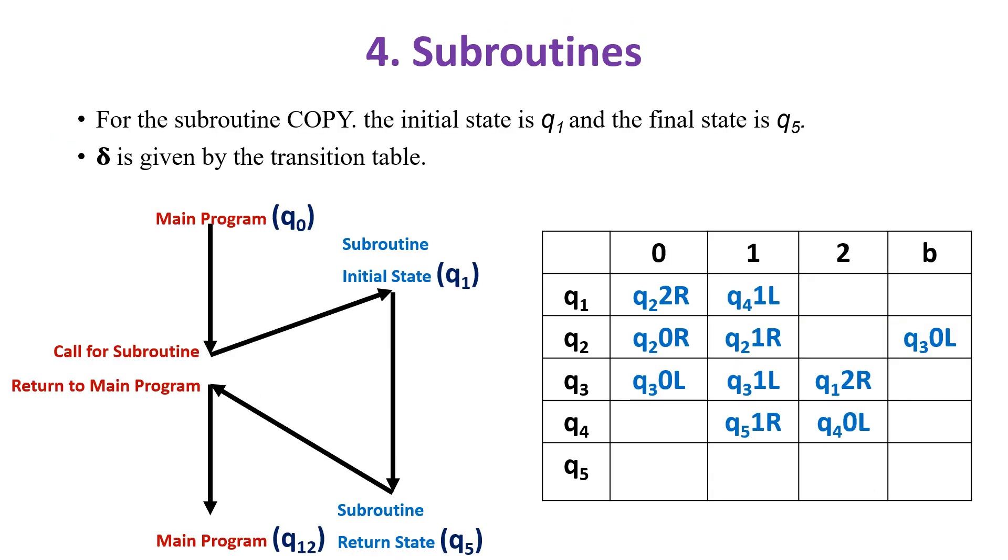For the subroutine COPY, the initial state is q1 and final state is q5. The delta transitions are given in the transition table.